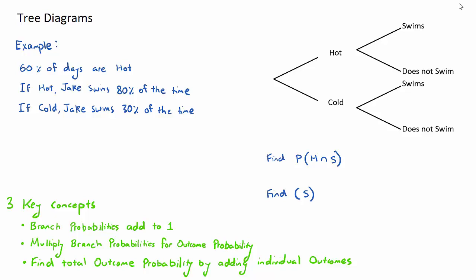We'll go through these as we answer an example question. In this example, we're told that 60% of the days are hot. If it's hot, Jake swims 80% of the time. If it's cold, Jake swims 30% of the time. We have a tree diagram here on the right. It's a two-stage tree diagram, so the first stage is the temperature and the second stage is swim or not.